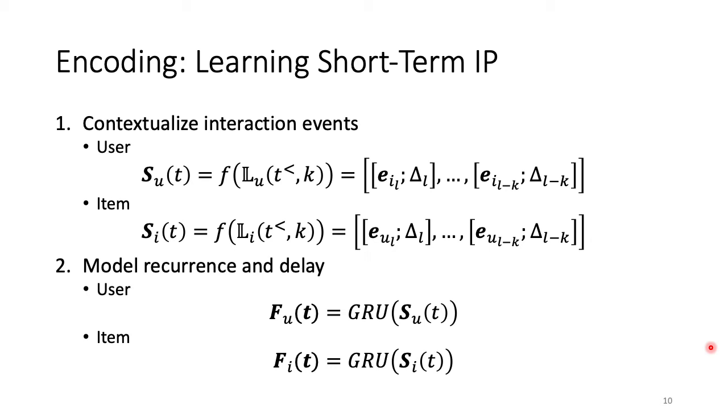We do the same contextualization for the item. Finally, we model recurrence and delay using time-aware recurrent neural network, which gives us these high-level features for both user u and item i at time t.